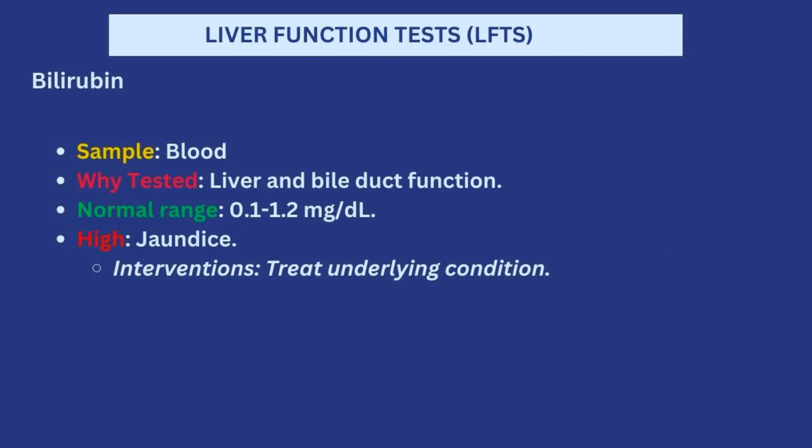Next are the bilirubin levels, checked to know the liver and bile duct function. When you hear bilirubin, the next thing that comes to mind is jaundice. Once the levels of bilirubin are high, the patient is already experiencing jaundice. Normally it should be between 0.1 to 1.2 milligrams per deciliter. If the patient has jaundice, you need to treat the underlying cause — whatever is impeding the liver and bile duct function, whether it is obstruction or otherwise, you need to identify and treat it.